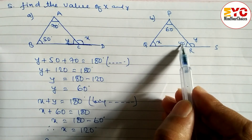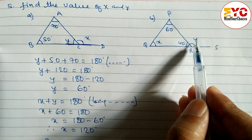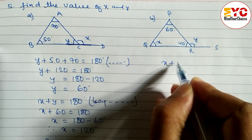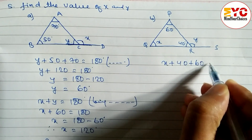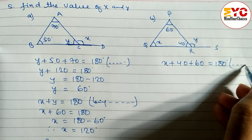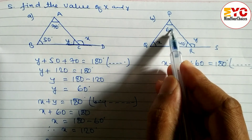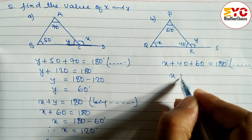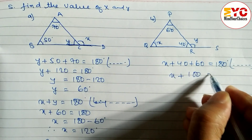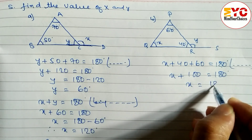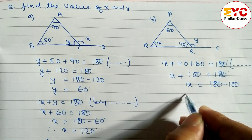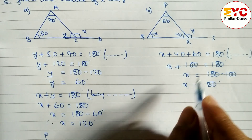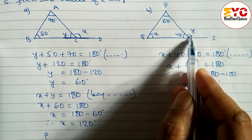Now look at the next question. This is also the same — when you add the angles of the triangle we get the value of x. So x plus 40 plus 60 equals 180 degrees, reason: sum of angles of the triangle. Adding 40 plus 60 gives 100, so x equals 180 minus 100, therefore x equals 80 degrees.